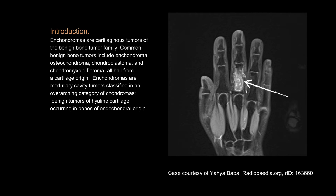Introduction. Enchondromas are cartilaginous tumors of the benign bone tumor family. Common benign bone tumors include enchondroma, osteochondroma, chondroblastoma, and chondromyxoid fibroma — all of cartilage origin.